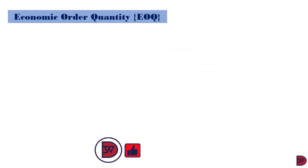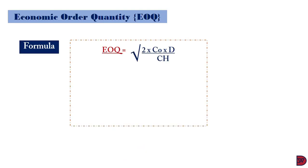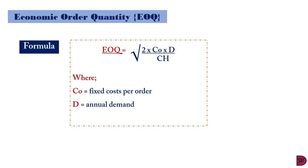A more accurate and time-saving approach to finding the economic order quantity is to use an established formula. The formula is the square root of (2 × CO × D) divided by CH, where CO is the cost per order (which is fixed), D is the annual demand, and CH is the holding cost per unit. So the formula is: square root of (2 × cost per order × annual demand) divided by the holding cost per unit for the year.